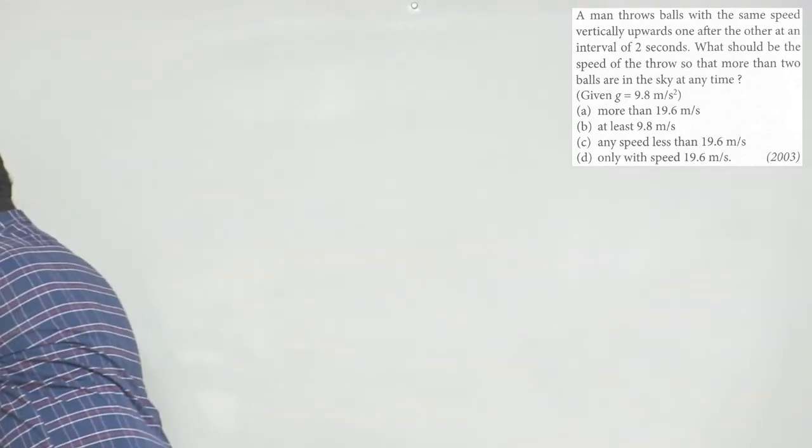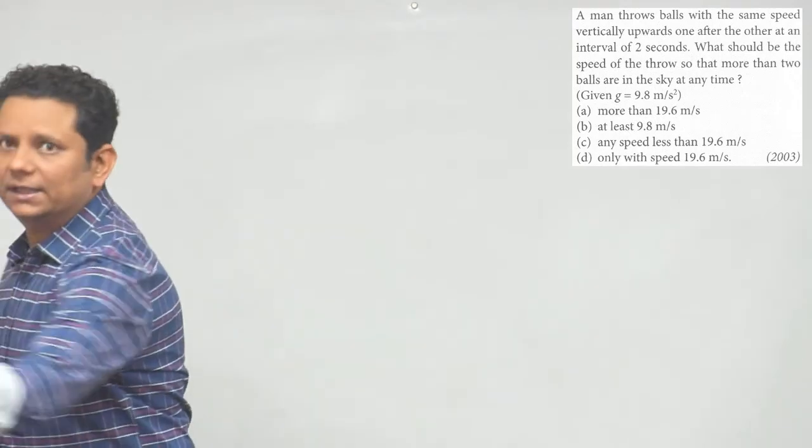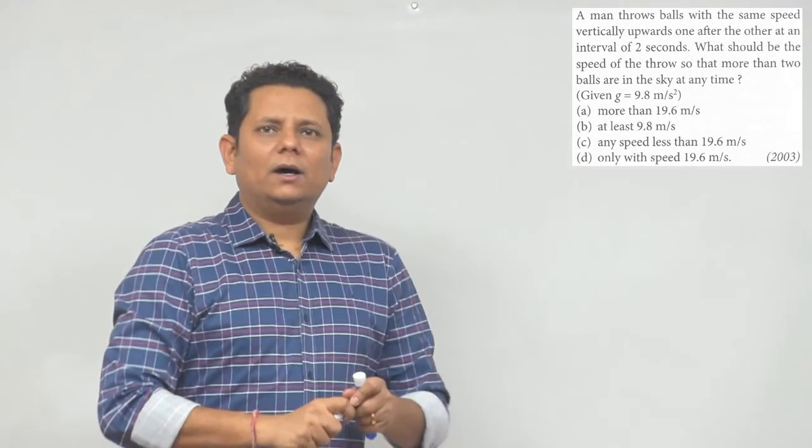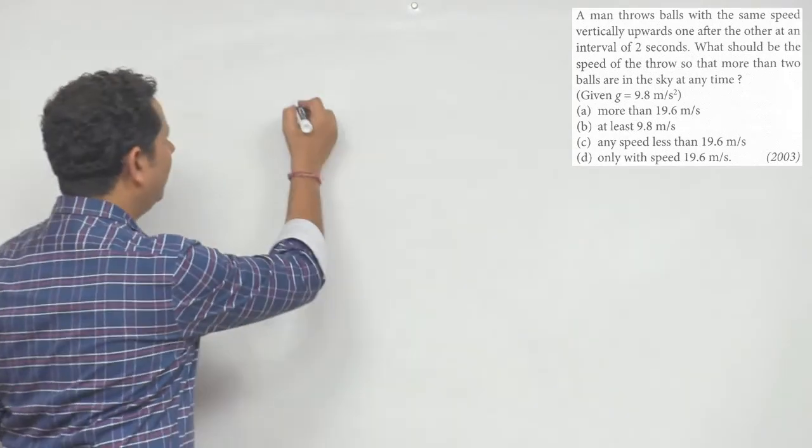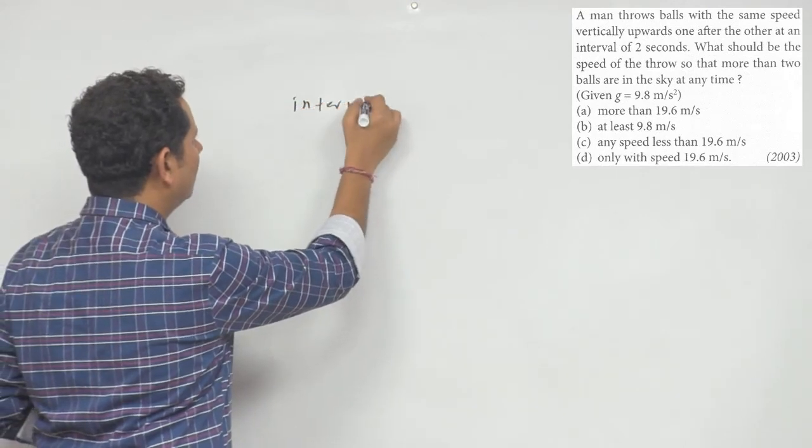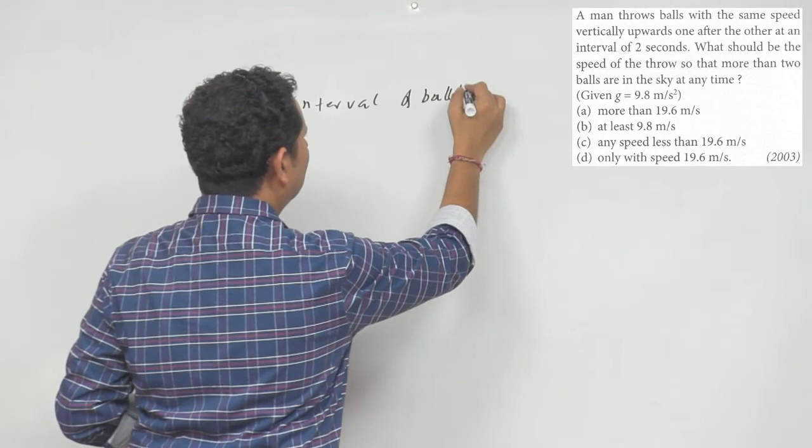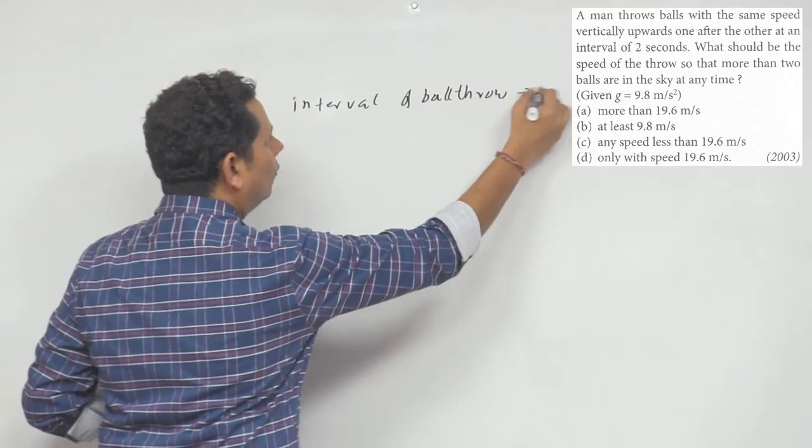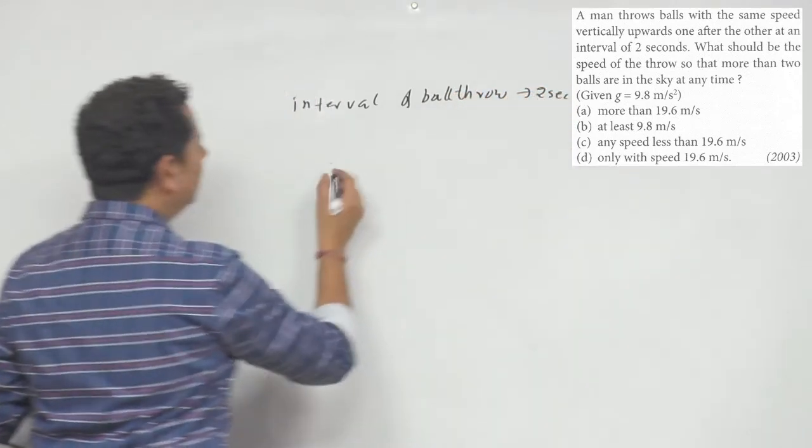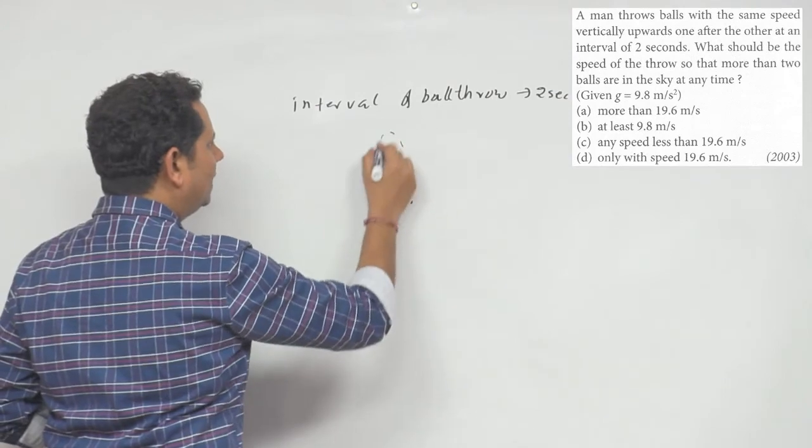That is what we want. So in this case, the time of flight between the interval of balls thrown is 2 seconds.